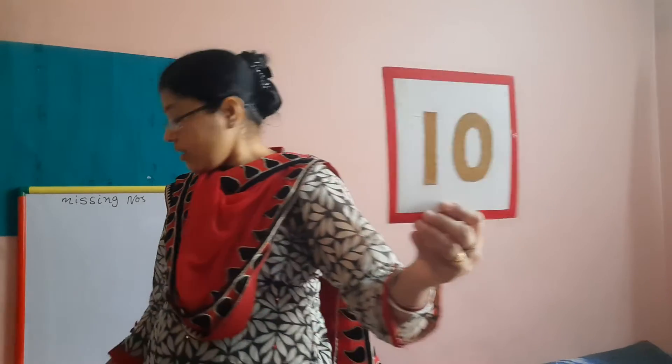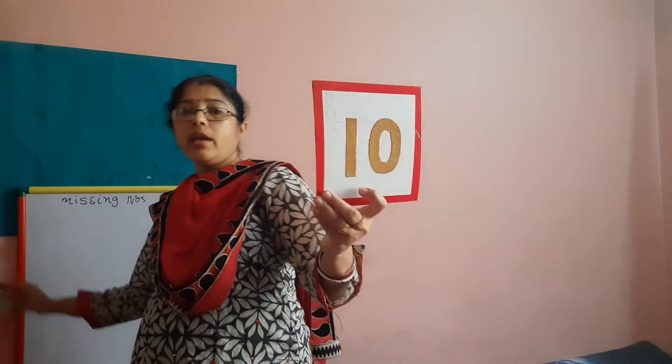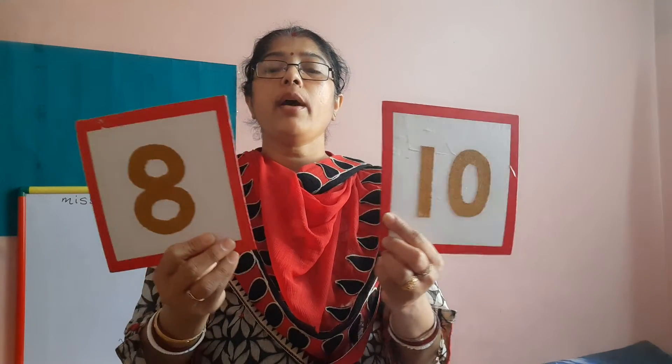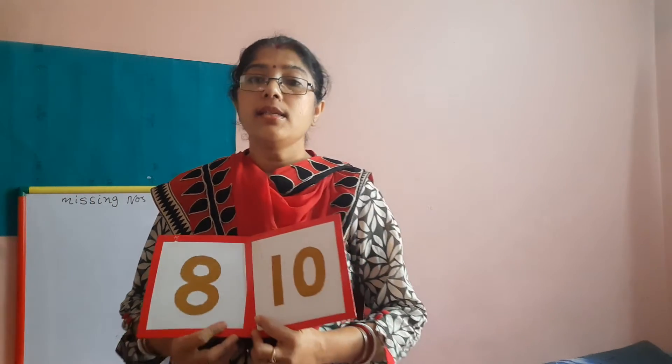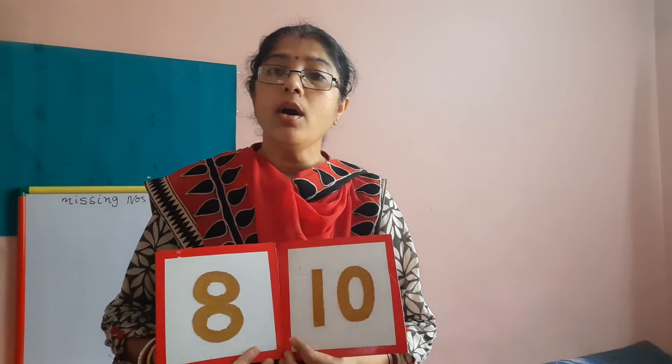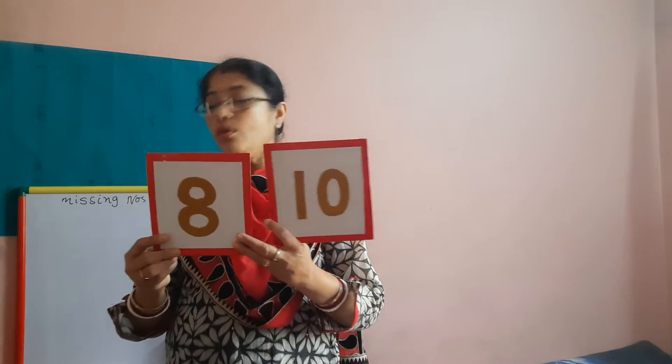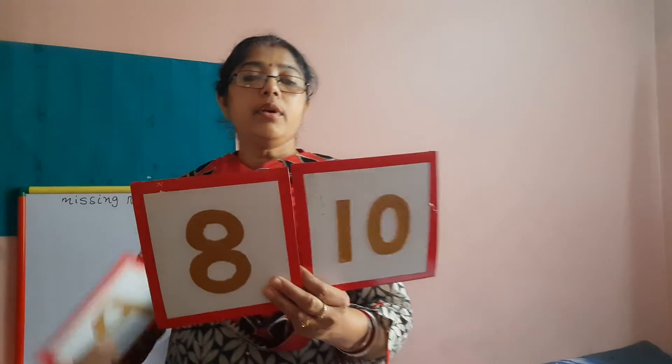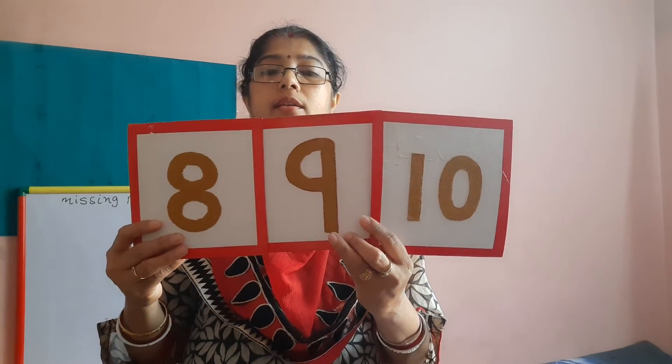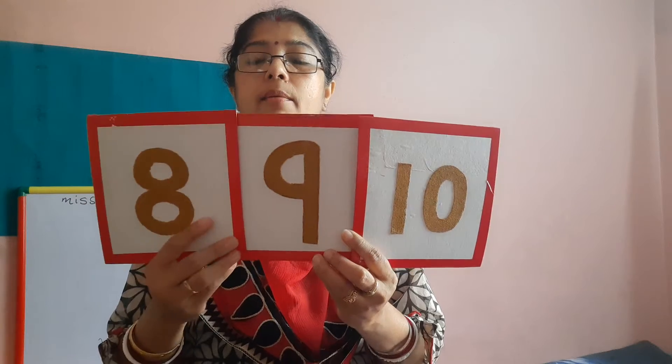Again, in the same way for backward counting also. This one is number 10. And number 8. Ab hum ne toh backward counting karna hai. Number 10 and number 8. Backward counting kaisa hai? 10, 9, 8, 7, 6, 5, 4, 3, 2, 1. 10, 9, 8. Par 9 is not there. 10 ke baad 8. Now where is number 9? Number 9 is missing. So I will put number 9 in between. 10, 9, 8. Ab hamara sequence complete hua.